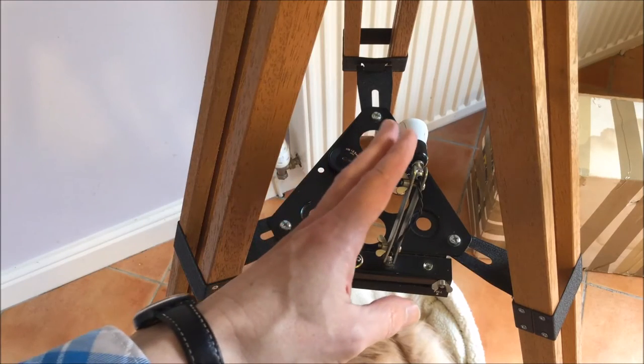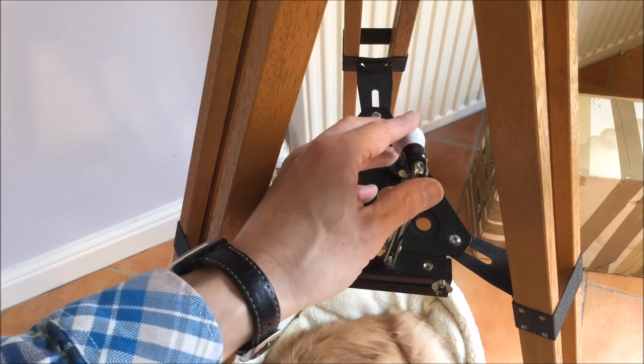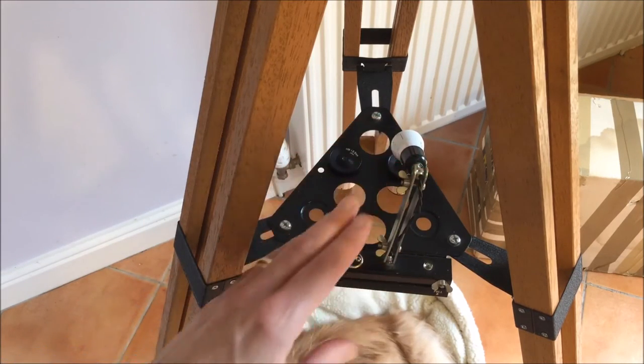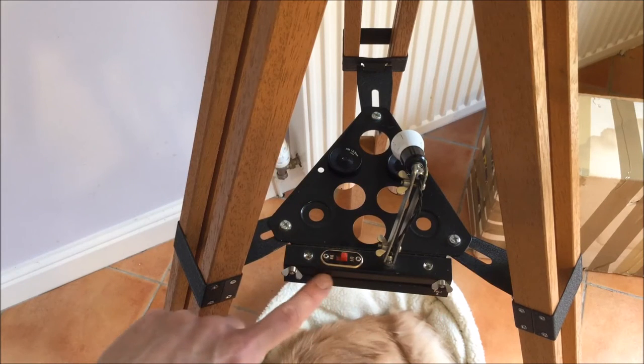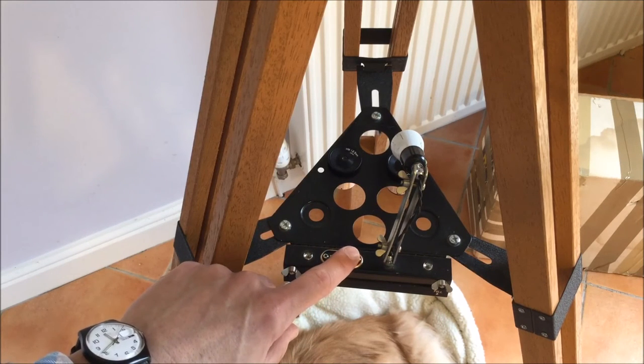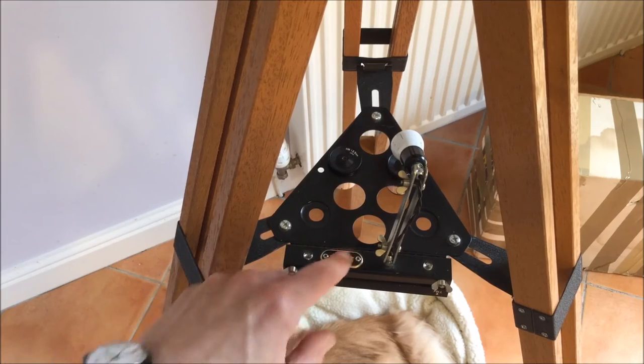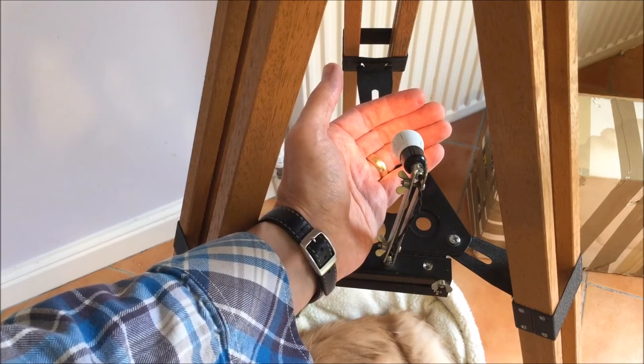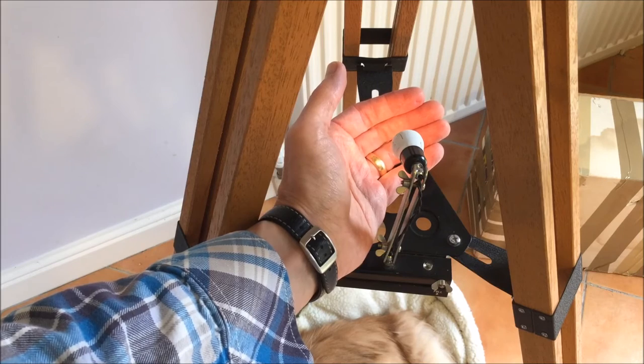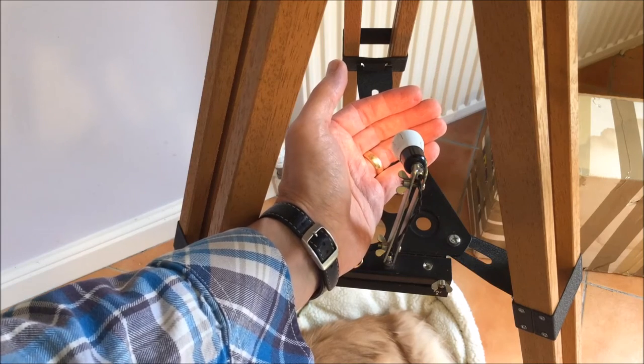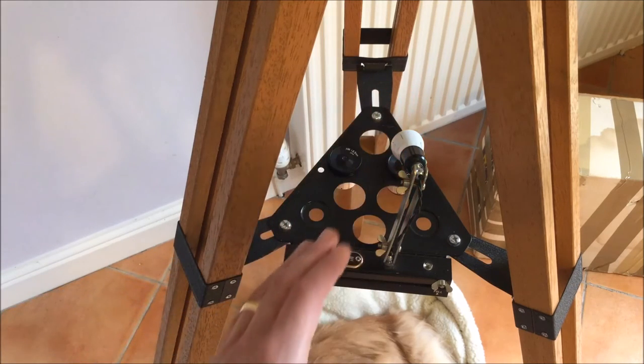But more interesting for me, I think, is this little unit here. Comes with its own light. Put your batteries under here, and you can turn the light on and off, which I think is a really nice feature to allow you to find the accessories when you're out in the nighttime.